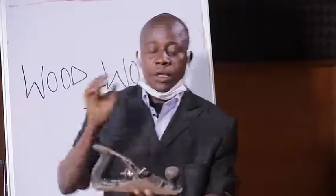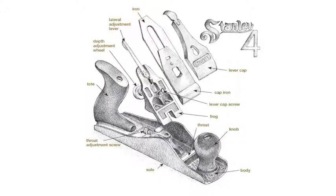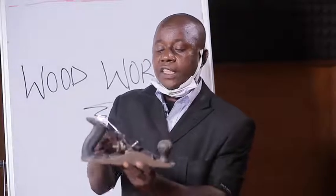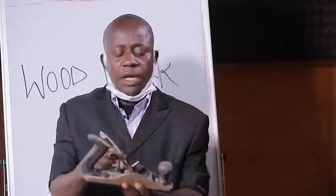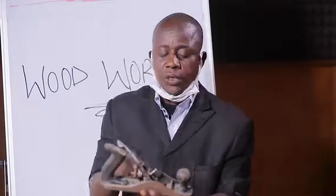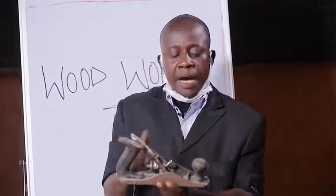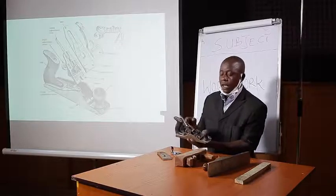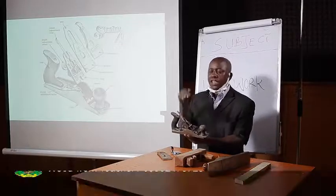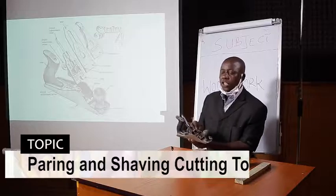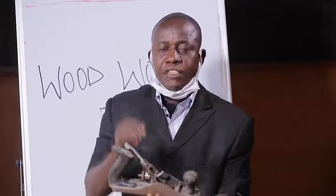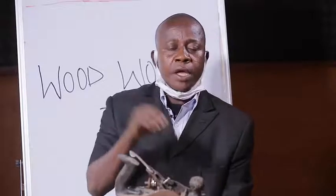Still on the frog, we have the depth adjustable wheel. This is the depth adjustable wheel. What do we use the depth adjustable wheel for? The depth adjustable wheel is behind the frog, and its usage is to gauge the depth at which your cutting iron or cutting blade will cut. It is for adjusting the depth of shavings to be performed when the plane is being used.